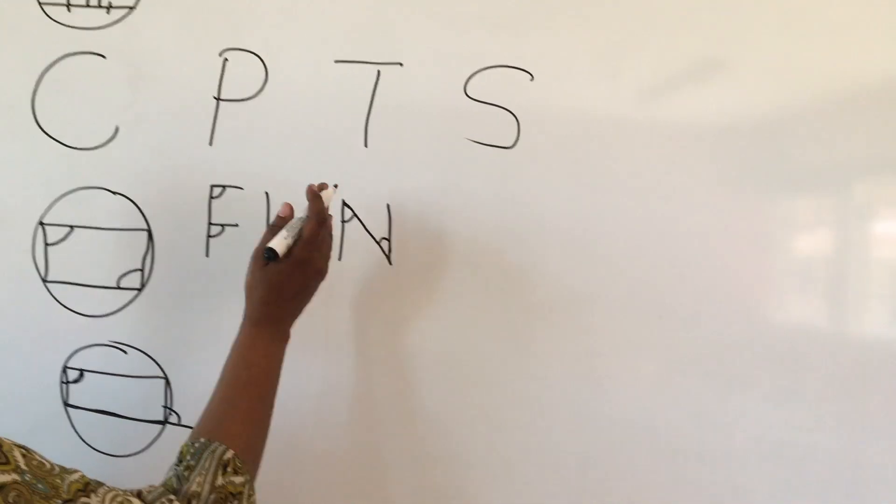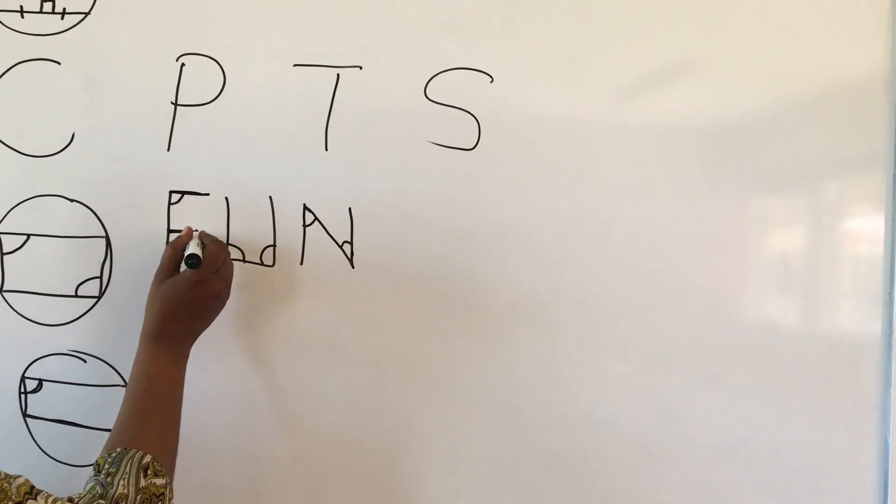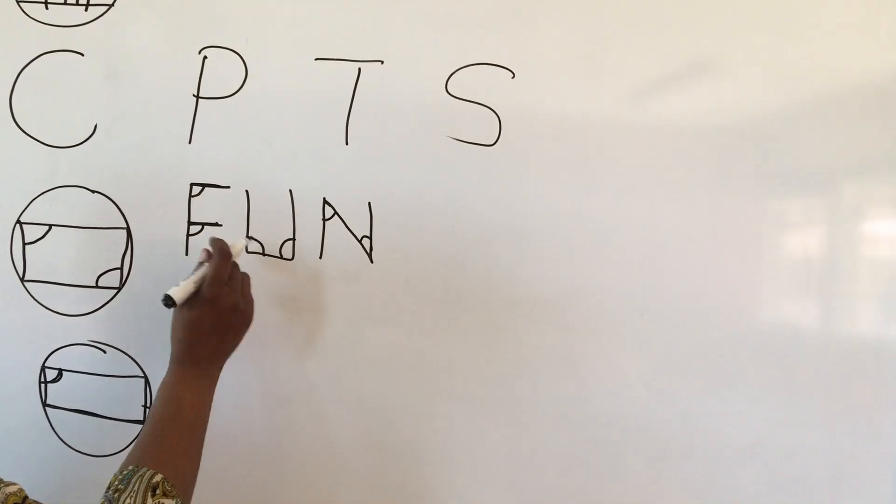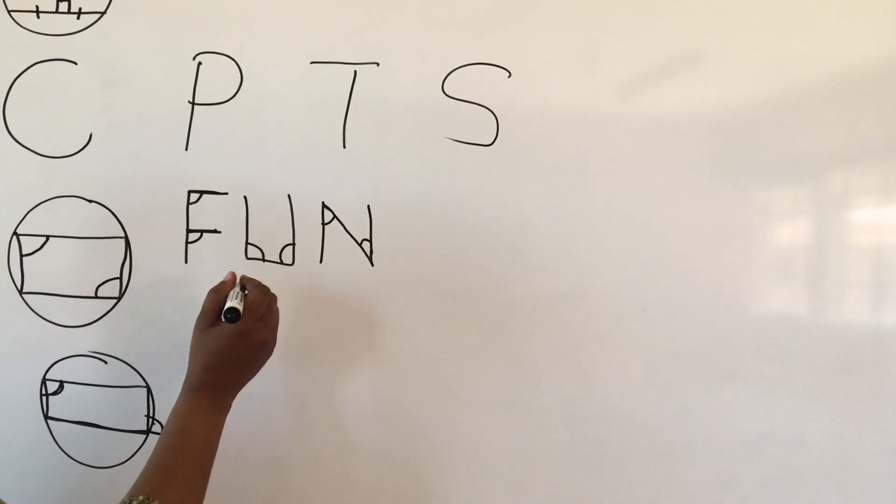Now with this theorem, the important thing, you need to write the parallel lines. A, B parallel to C. You have to write that. If you just write alternate angles, but you don't write the parallel lines, you don't get the mark. You need to write which parallel lines I'm talking about.